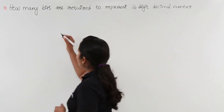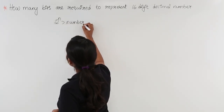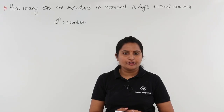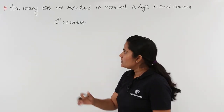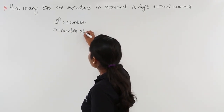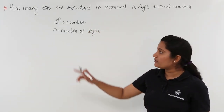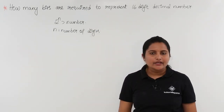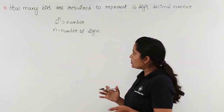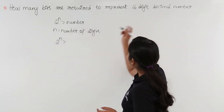We have a formula: 2 power n must be greater than your number. This is the formula to identify the number of bits needed to represent a decimal number, where n is equivalent to the number of binary digits. This formula will show how many binary digits you need to take for a particular decimal number. Here, 2 power n must be greater than the 16-digit decimal number.